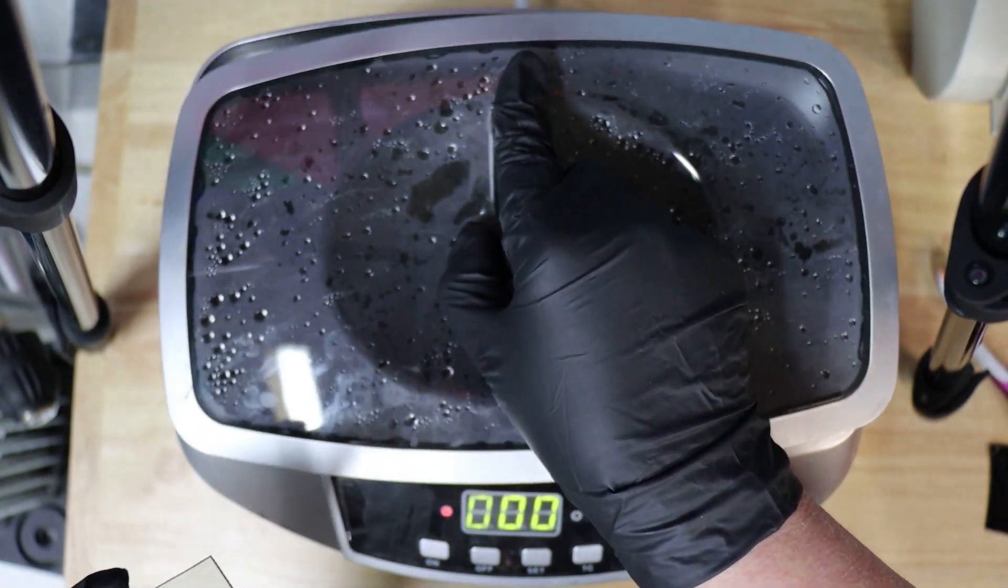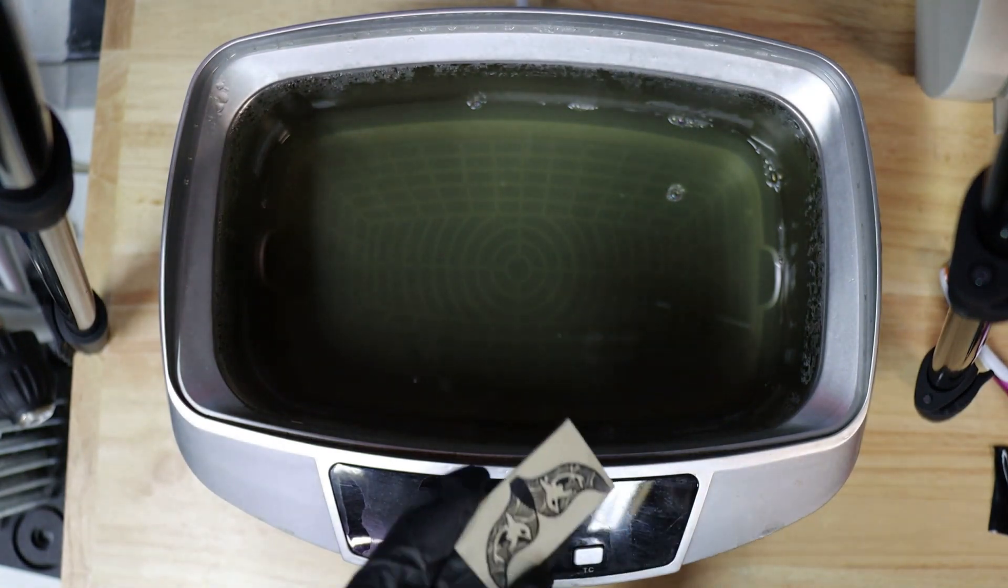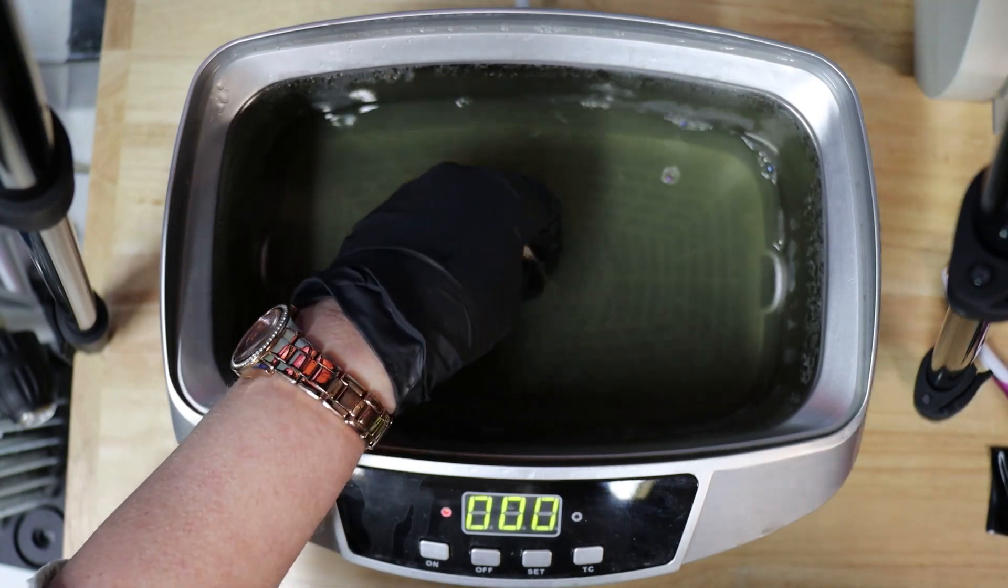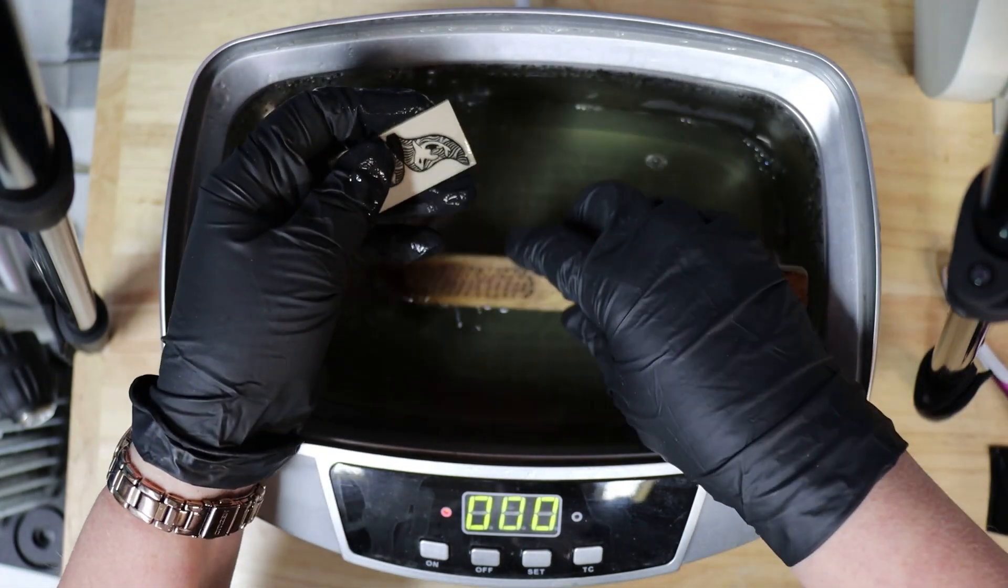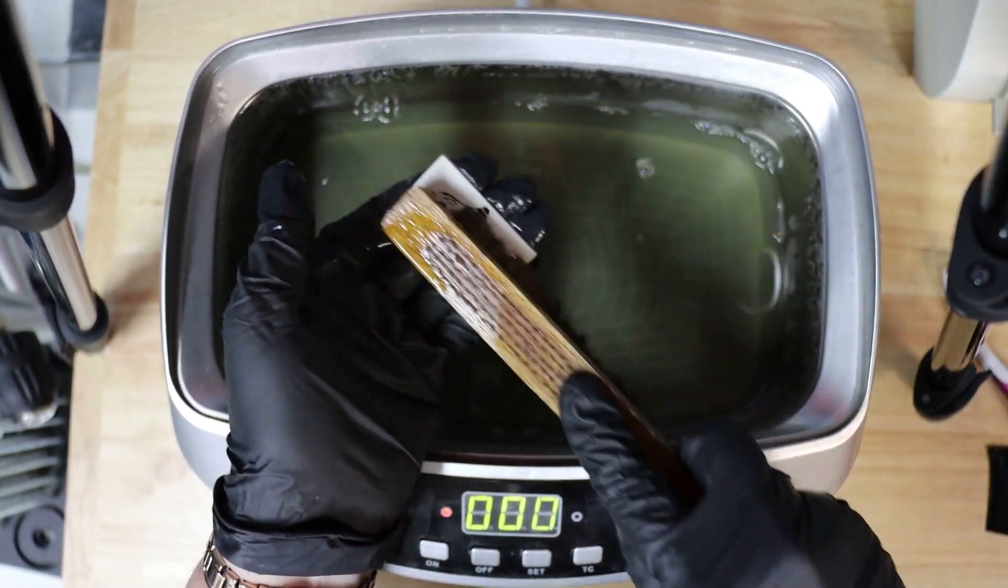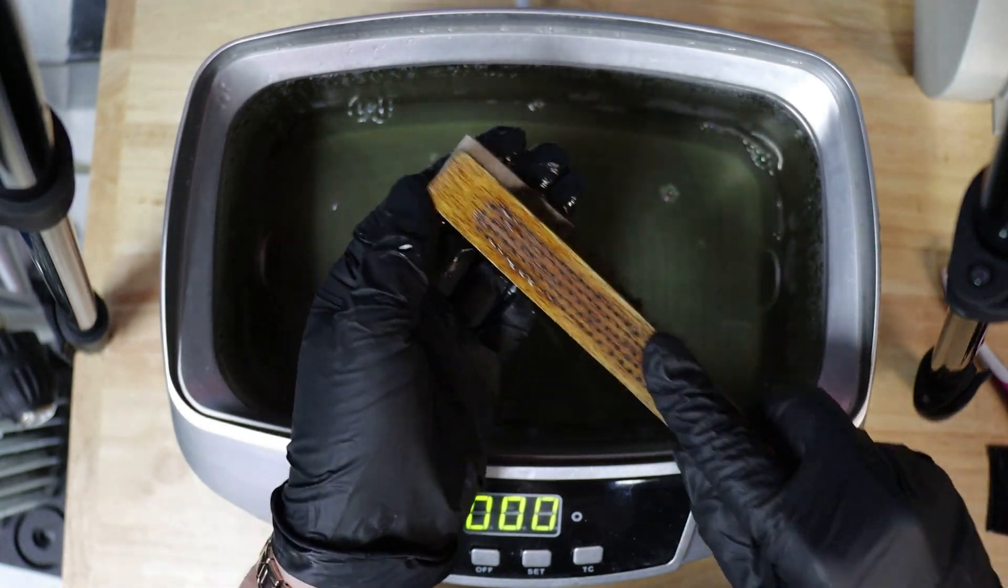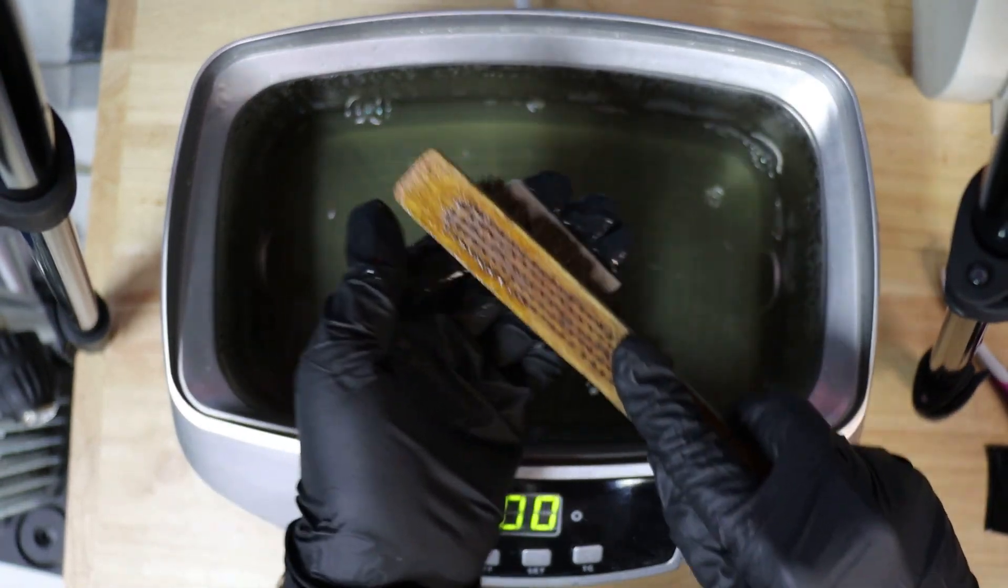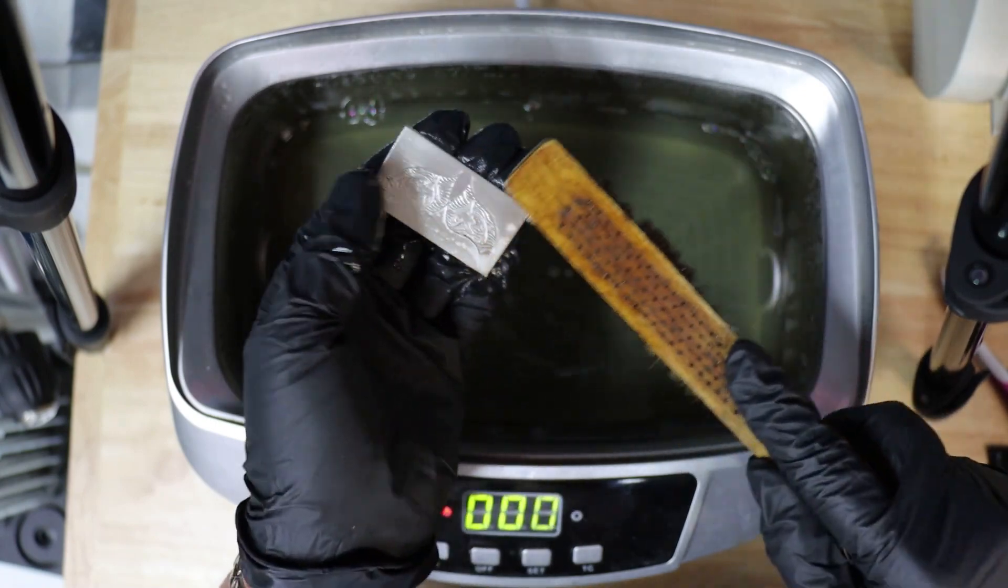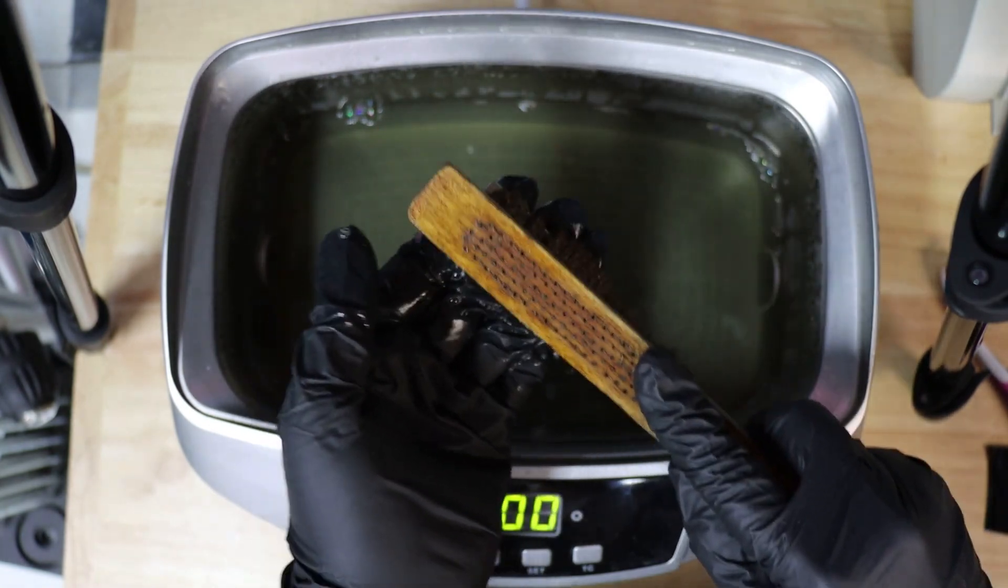So now we want to remove the toner, the remaining toner from the piece. We can just dip it in our heated ammonia solution and use the soft brass brush and just give it a good scrub, and that should remove the toner. Might take a little elbow grease, but you should be able to remove it all.